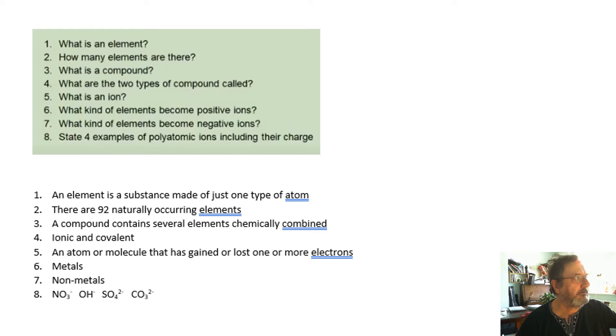Ionic and covalent. An ion is an atom or molecule that has gained or lost one or more electrons. What kind of elements become positive ions are metals and non-metals become negative ions.